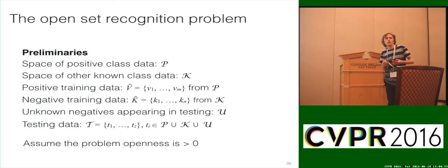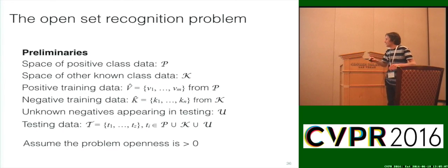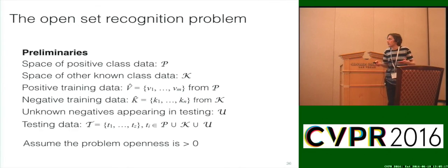We're going to build simply and then try to scale to more advanced solutions. The open set recognition minimization incorporates open space risk, associated with the unknown, plus empirical risk based on the training data — known positives and known negatives — with some regularization constant.